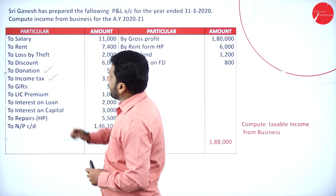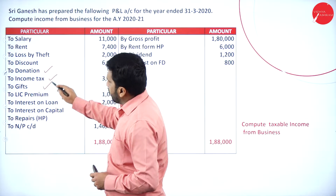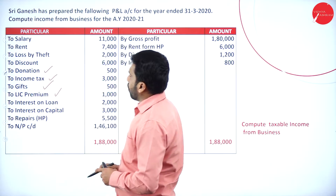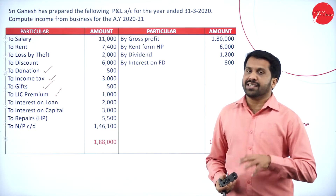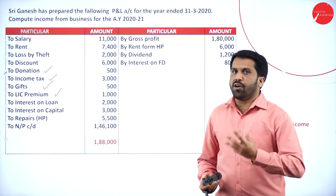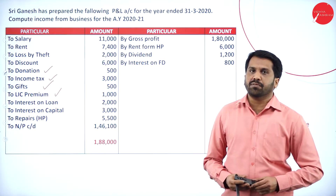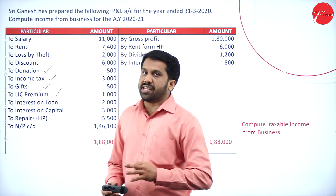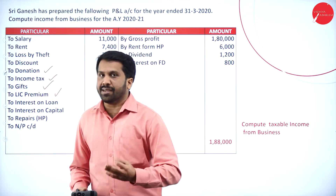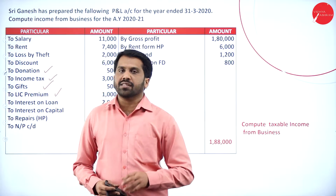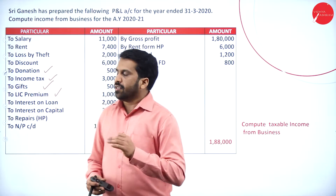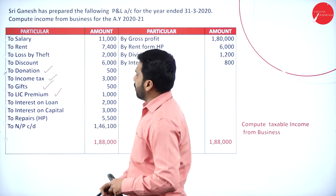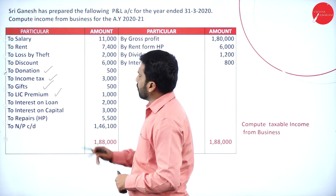Income tax — yes, not business. Gift — yes. LIC premium — yes. Interest on loan — we assume it is taken for business purpose. Unless they mention loan is taken for other than business, we consider interest on loan as a business expenditure, so we will not touch it.